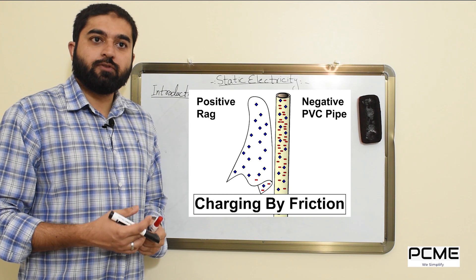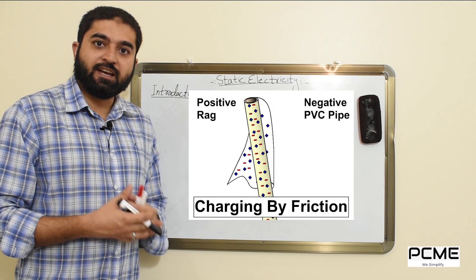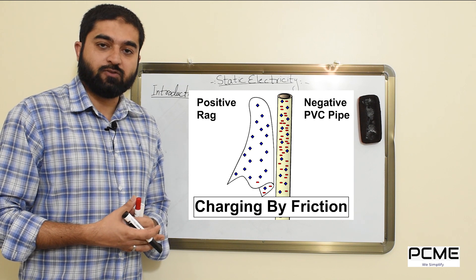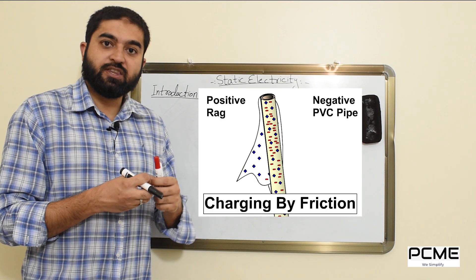Due to the friction, heat is transferred to the electrons and those electrons get excited. When those electrons get excited they break apart.